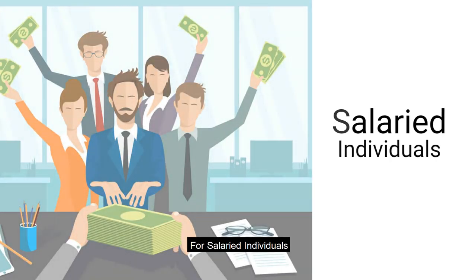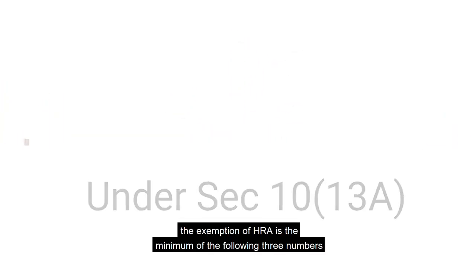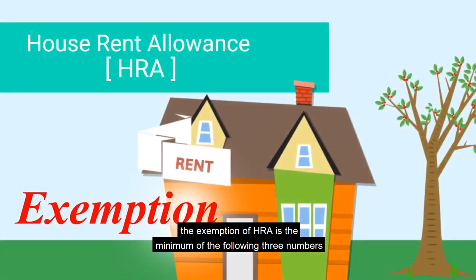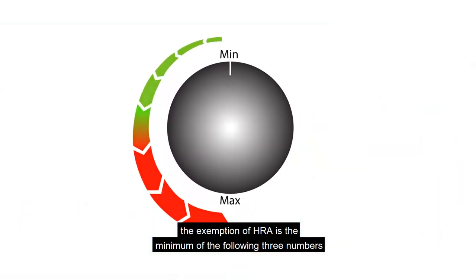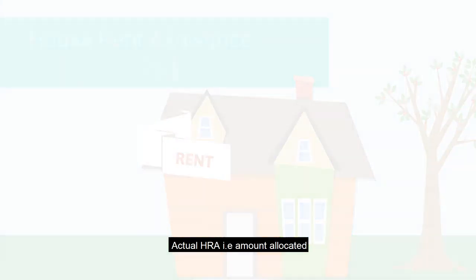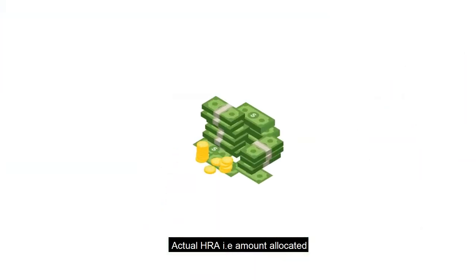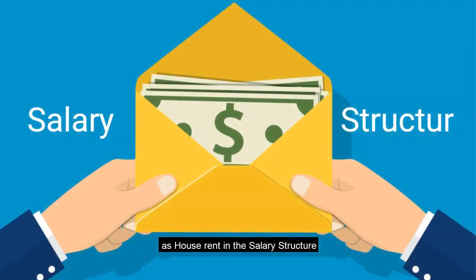For salaried individuals, under Section 10(13A), the exemption of HRA is the minimum of the following three numbers. Number one: actual HRA — that is, the amount allocated as house rent in the salary structure.